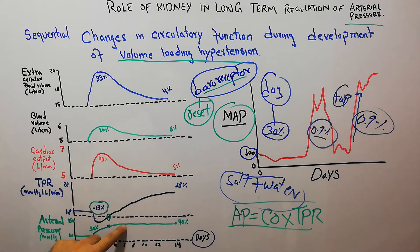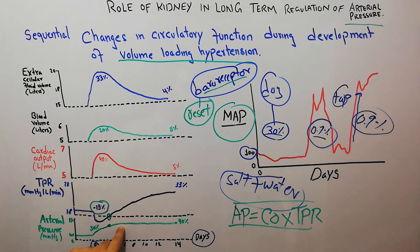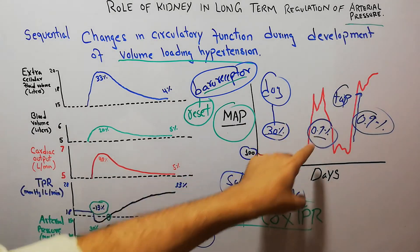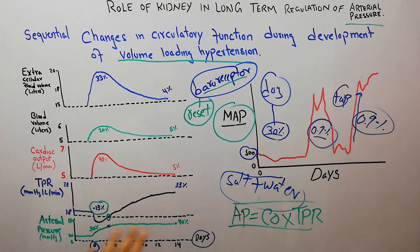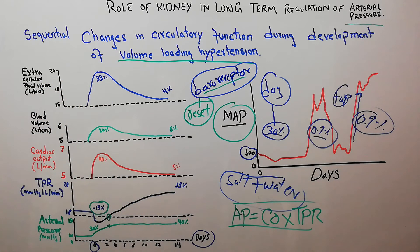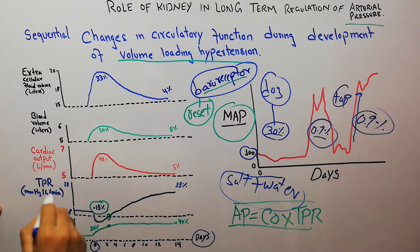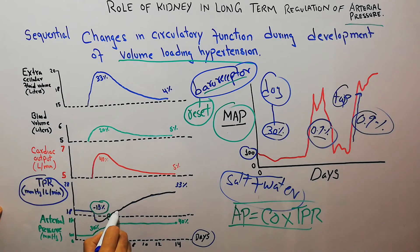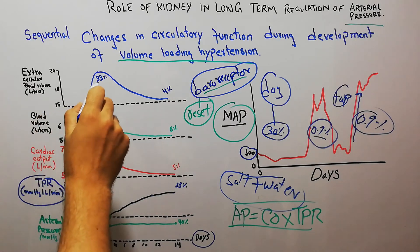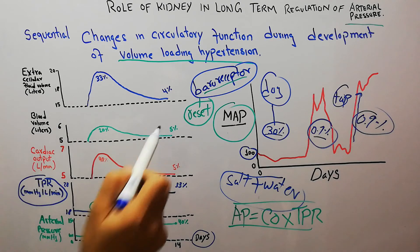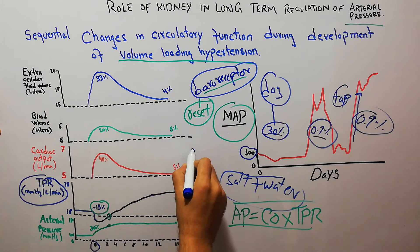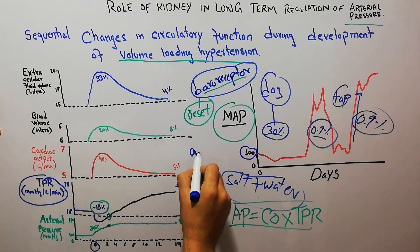Initially the elevated arterial pressure was due to the extracellular fluid volume, blood volume, and cardiac output increases. But now, in the long term, the elevated arterial pressure is due to the increase in total peripheral resistance. This increase in total peripheral resistance is caused by a phenomenon known as auto-regulation.